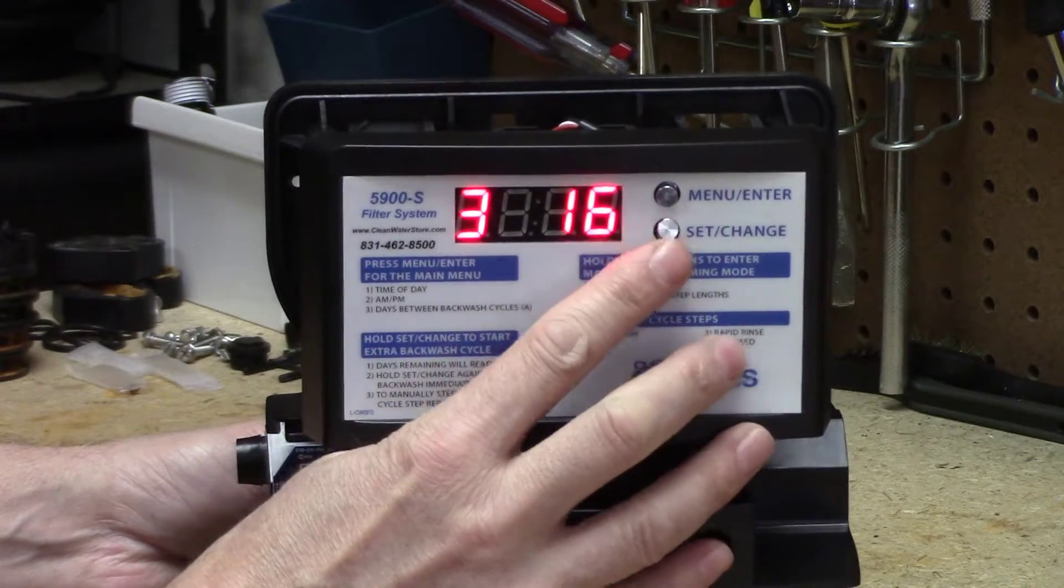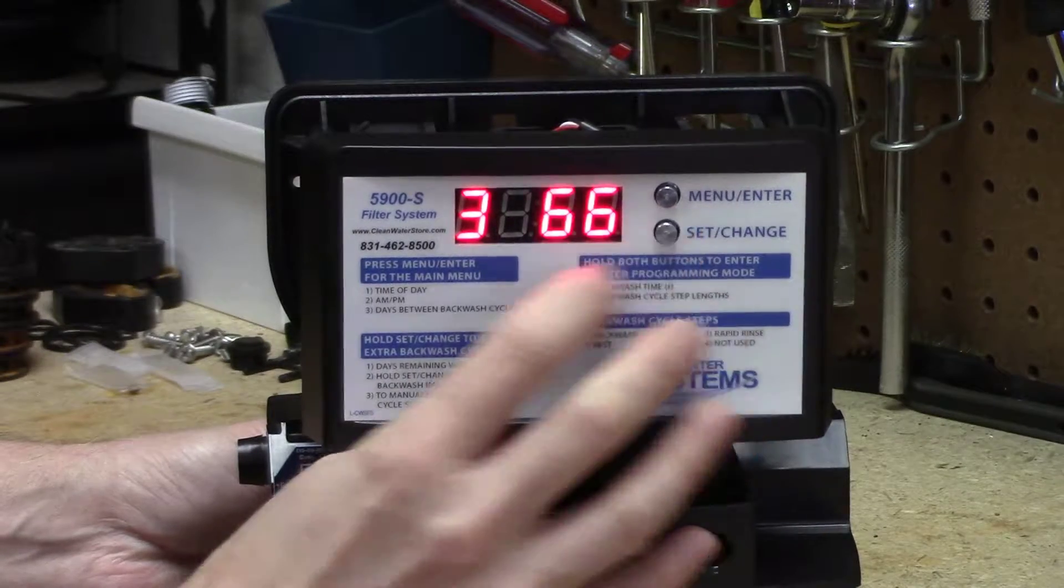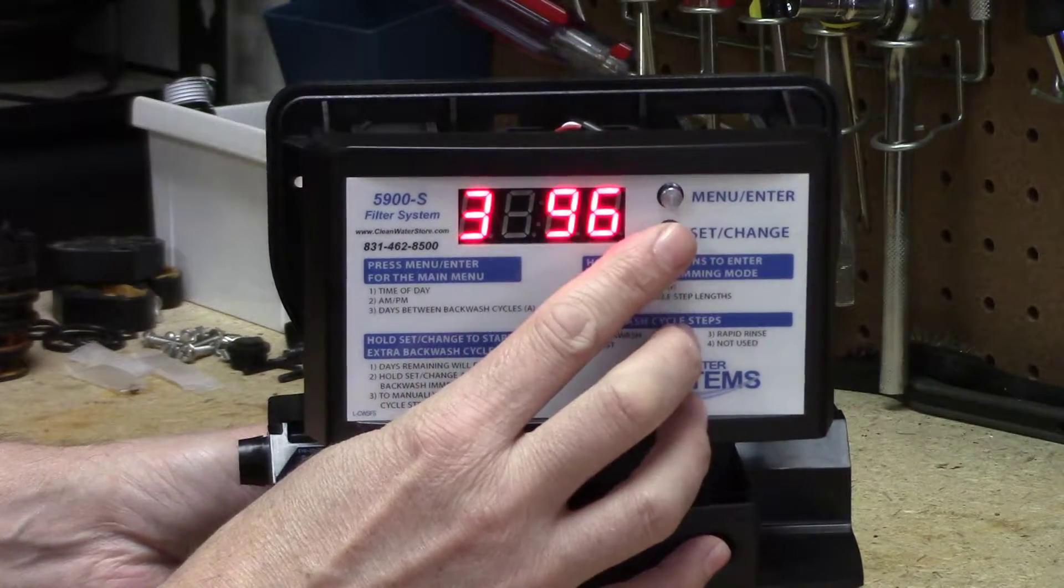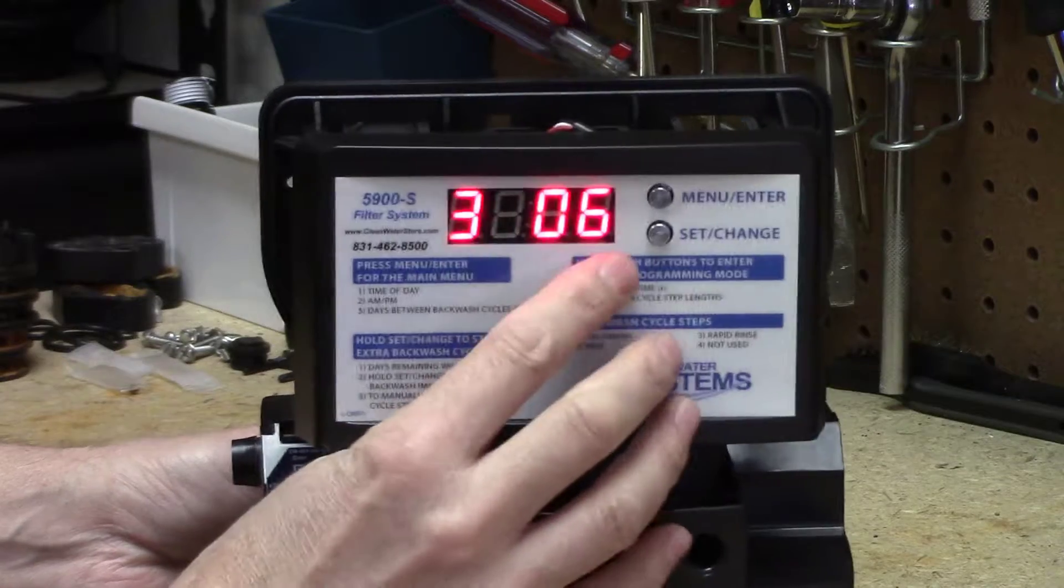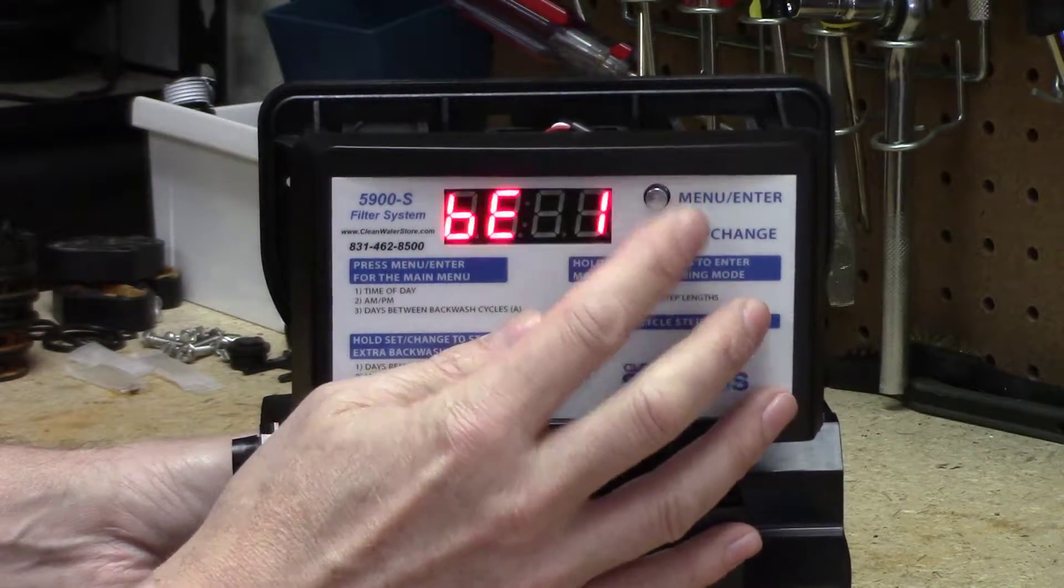Now we need to change the one to a zero. It's flashing. Press the set change button, and we're at zero. Press it all—three, zero, six. That's what we want, and press the menu enter button.